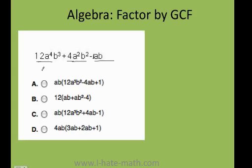Well I can see here that I can't really factor any of the numbers, because the greatest common factor between 12, 4, and 1 is just 1. That is, 1 is the only number that if I divide 12 by 1, 4 by 1, and 1 by 1, is the only one that works.